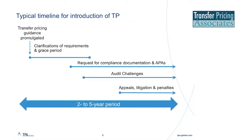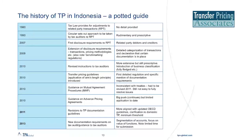This diagram represents the normal introduction of transfer pricing to a jurisdiction — normally something of a beta period with feedback before any enforcement. But a flurry of activity in 2009 and 2010 means that basically all of this happened at once in Indonesia, and we were left dealing with transfer pricing issues on appeal before the ink was dry on documentation regulations. As you can see from this chronological list, the potential for adjustment to arm's length pricing or characterization has been around for over 30 years, but there was no clear guidance explaining what was required of taxpayers.